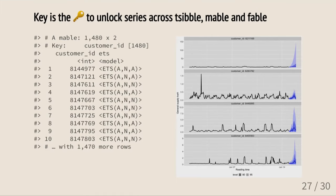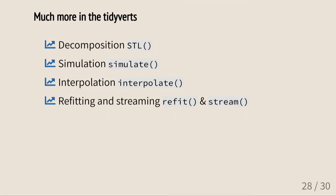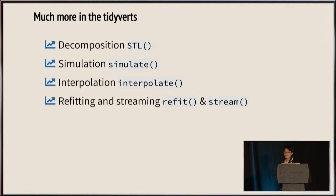Models are scalable, but visualization is not, so I just plot four customers with their forecasts. At the individual level, there's lots of noise producing much larger prediction intervals. I've shown a portion of what Tsibble and Fable can do — we also have decomposition, simulation based on model fits, interpolation of missing values, and model support for streaming data. Please check them out.